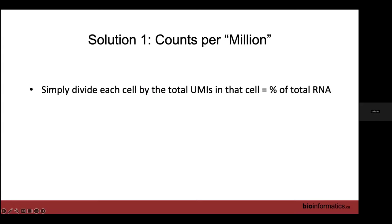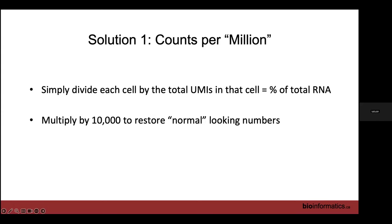We want to get rid of this effect. The easiest way is counts per million — though 'million' is in quotation marks because it's not really a million for us. We take each cell, divide by the total number of UMIs in that cell — essentially getting the percentage of expression for each gene — then multiply by 10,000 or some other scaling factor so we're looking at normal integer-like numbers rather than values like 0.0001.